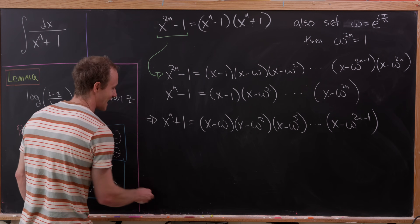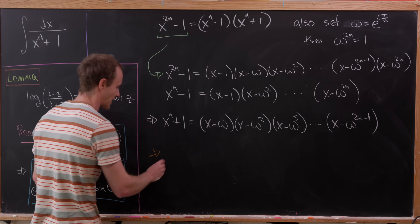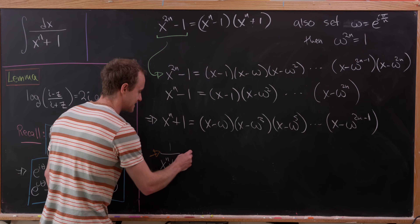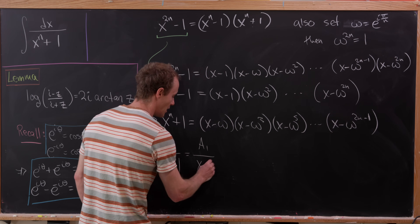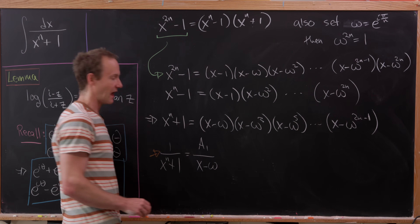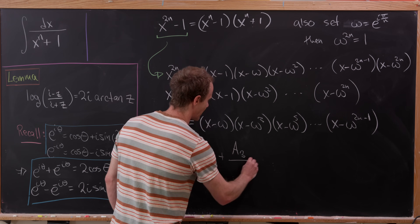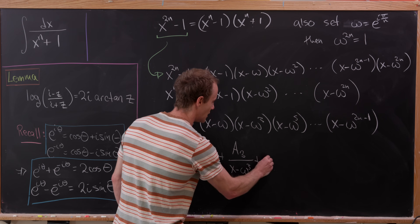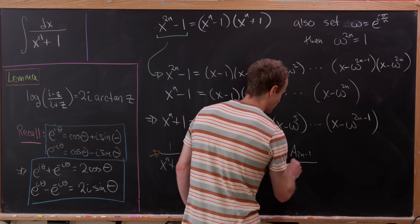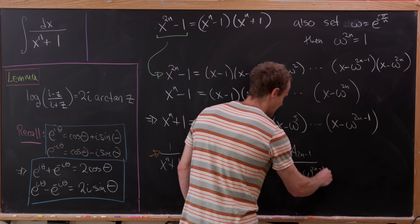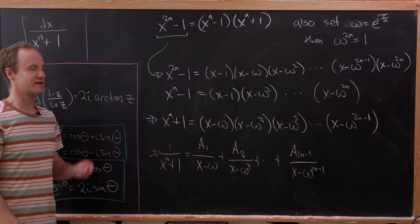That motivates the following shape for our partial fraction decomposition: 1 over x to the n plus 1 should decompose as a1 over (x minus omega), plus a3 over (x minus omega cubed), all the way up to a_{2n-1} over (x minus omega to the 2n minus 1). Now we just have to figure out those coefficients.